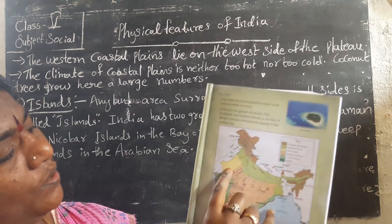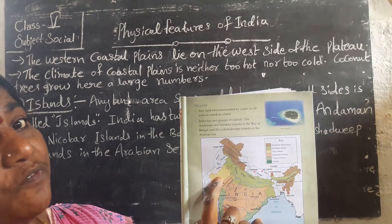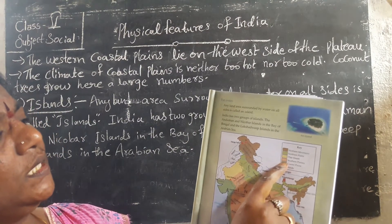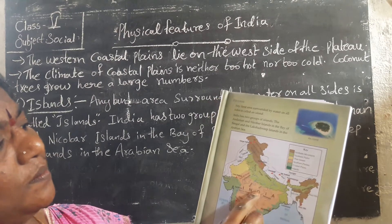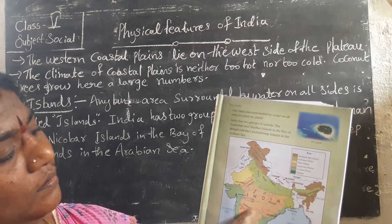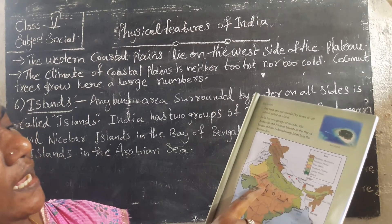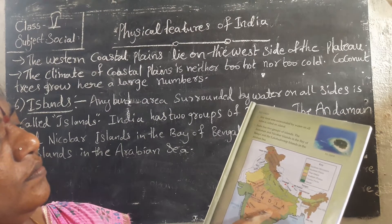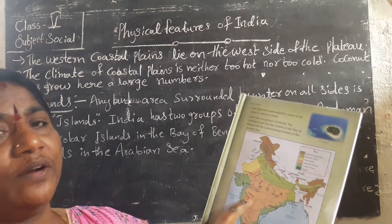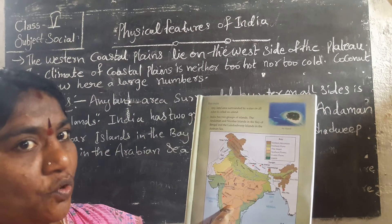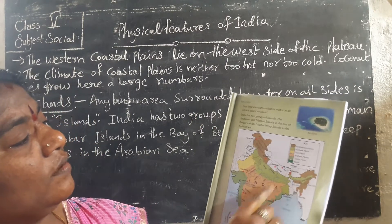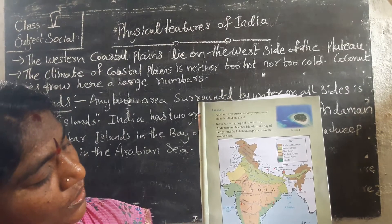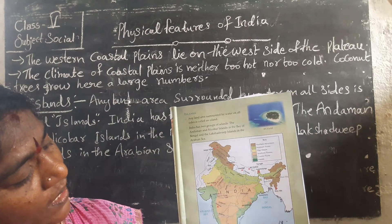Light yellow is the Thar Desert — it is located in the state of Rajasthan. Next, light reddish represents the Southern Plateau in the middle. The green color represents the coastal plains on the sides.